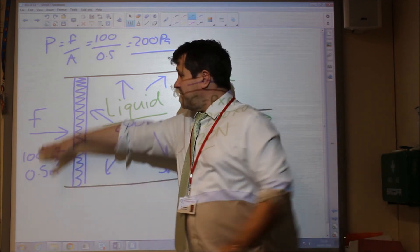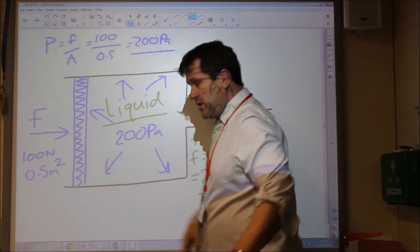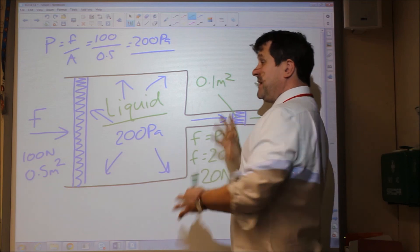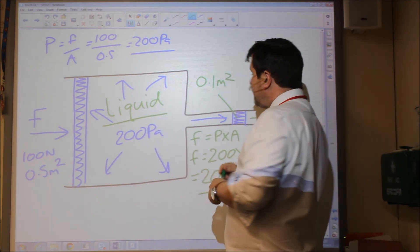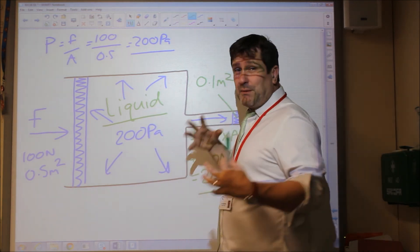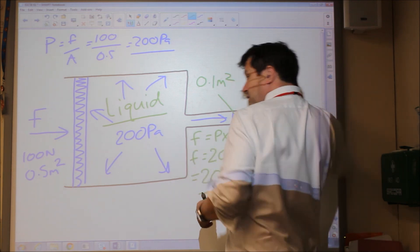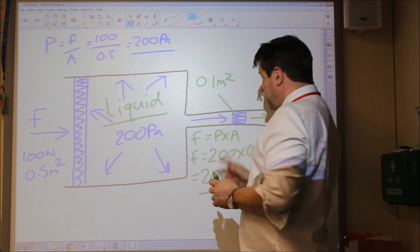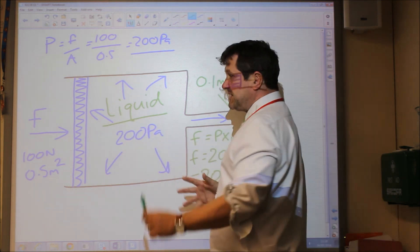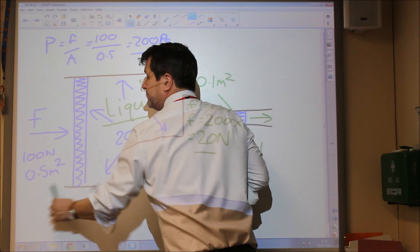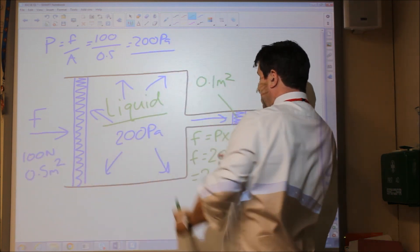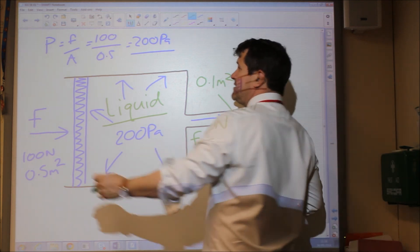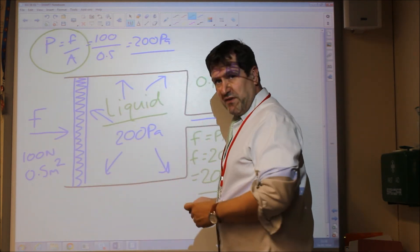So pushing on the big area with a force of 100 newtons creates a force of only 20 newtons on the smaller side. Typically, this system is used as a force magnifier, where you push on the smaller side in order to create a larger force on the opposite side. All we're using is the principle that you create a pressure, the pressure is the same everywhere, and therefore you can calculate a force elsewhere - all using the same equation: pressure is force over area.